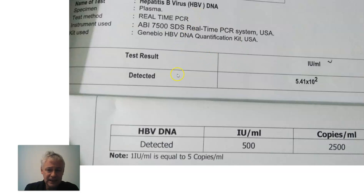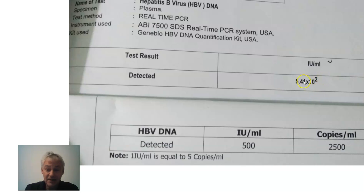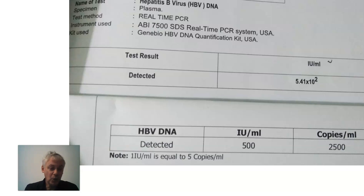Here we see a test result that gives you all the numbers. They've got five times ten to the power of two — so that's five hundred IU/mL. In copies it's two thousand five hundred, because one IU equals about five copies. So your log gives the number of zeros, and copies are times five — that's how you work it out.